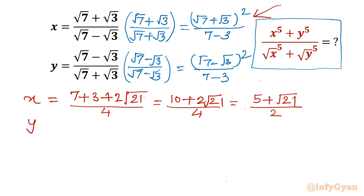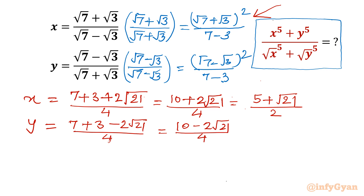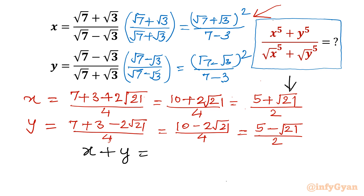Now for y: y is (√7 − √3)², which is (a−b)², so the 2ab term becomes negative. This gives 10 − 2√21 over 4, or (5 − √21) / 2. Now let's calculate x + y: the √21 terms cancel, leaving 5/2 + 5/2 = 5. So x + y = 5.